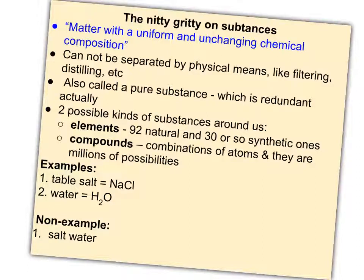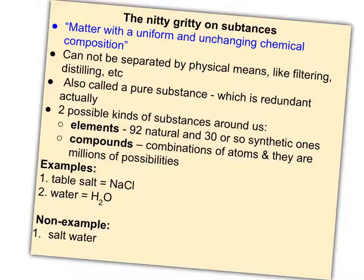There are two different kinds of substances: elements and compounds, which you've likely heard of in an earlier science class. We know of 92 natural elements on planet Earth — somewhere in the earth itself, in water bodies, or in its atmosphere, we can locate 92 different kinds of atoms. Scientists have also made about 30 or so synthetic elements, but most are short-lived and not very important to our study of chemistry. Our focus will be on the 92 natural ones, often organized on a periodic table.